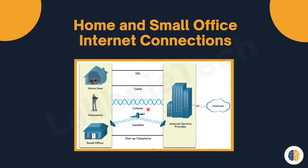The third one is cellular connection. Cellular internet access uses a cell phone network to connect to the internet. Wherever you can get a cellular signal, you can get cellular internet access. Performance is limited by the capability of your phone and the cell tower to which it is connected.